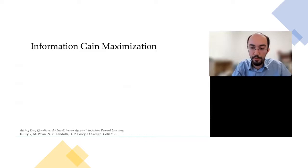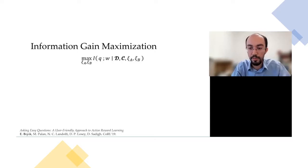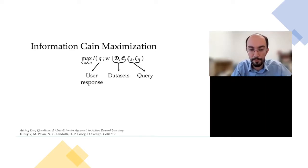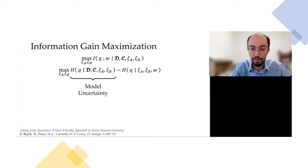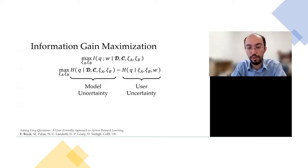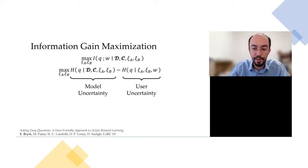To solve this problem, we formulated the active querying problem with an information-theoretic objective: maximize the mutual information between the user's response and the belief about the reward function, conditioned on the datasets and the query. Equivalently, this is the difference between two entropy terms. The first term quantifies model uncertainty on the user's response — we want to maximize this. The second term is conditioned on the true reward weight W and quantifies user uncertainty — we want to minimize this so user responses are reliable.